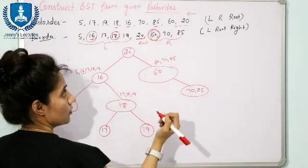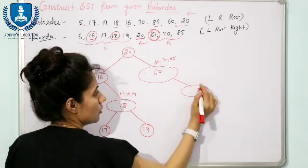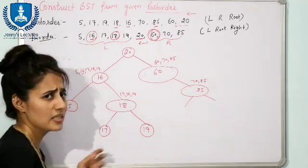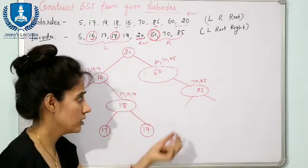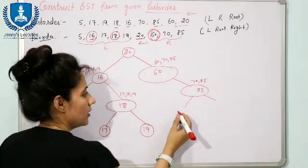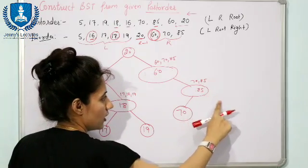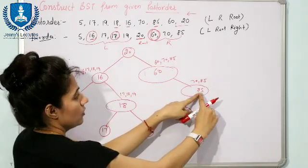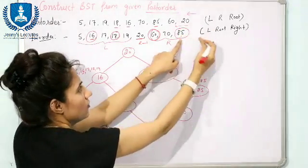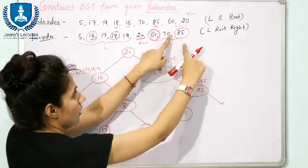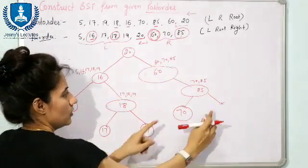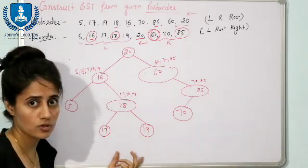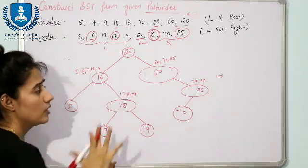Out of {70, 85}, traverse post-order from right to left — 85 appears first, so 85 is the root. To find 70's position: since this is a BST, 70 is less than 85, so 70 goes to the left of 85. Checking inorder confirms: to the right of 85 there is nothing, so right child is null. 70 is to the left of 85. The BST is now fully constructed from the given post-order traversal.